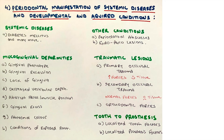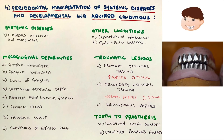Periodontal manifestation of systemic diseases and developmental and acquired conditions is a big topic. Systemic diseases such as diabetes mellitus and many more fall here. We also have mucogingival deformities: gingival phenotype, architecture, gingival recession, lack of gingiva, decreased vestibular depth, aberrant frenal or muscle position that can lead to gingival recession, gingival excess, abnormal color of the gingiva, and conditions of exposed roots. These overlap somewhat with other categories but that's how the classification has been constructed.